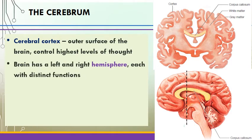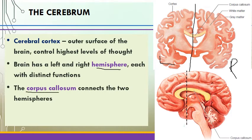The cerebrum can be divided into two parts. If you cut the brain down the middle into a right and a left half, you get left and right hemispheres. Each of those have different functions, though they are connected by a bundle of fibers known as the corpus callosum. The corpus callosum helps connect the two halves of the brain and makes sure that the functions happening on the left and the right are communicating with each other.